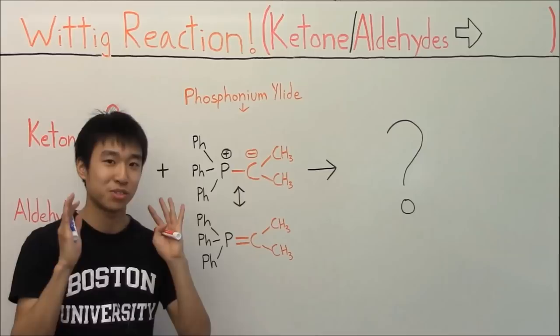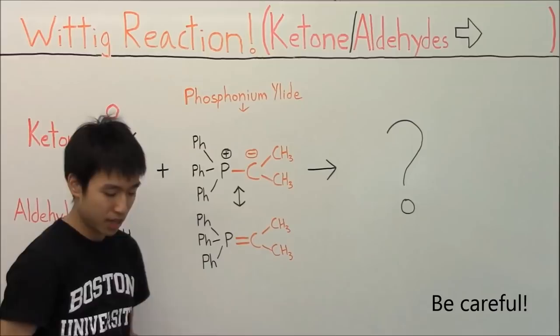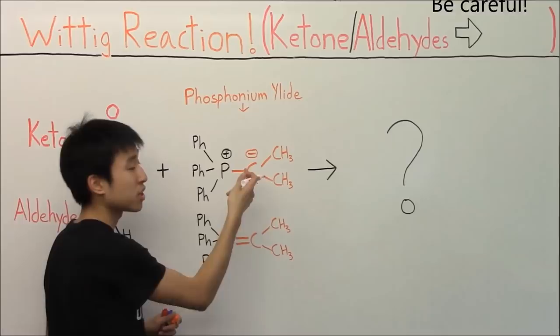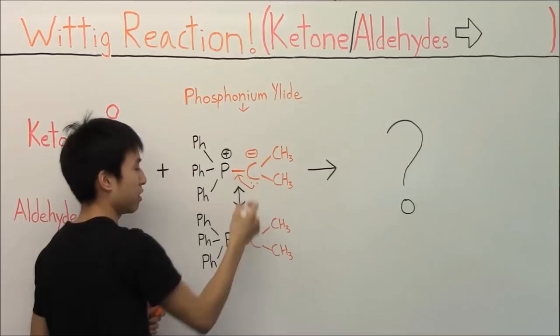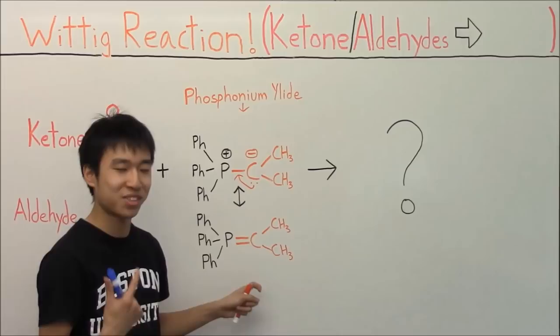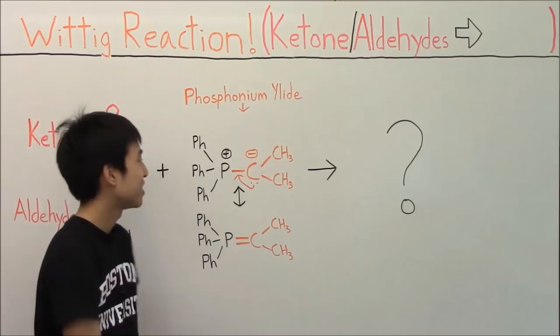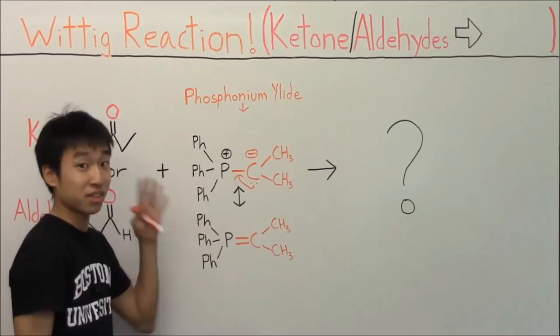I really want you guys to be aware that the ylid can be sneakily disguised in another form, because there's a resonance that can occur between the electrons of the carbon with a negative charge — also called a carbanion — which can resonate over and form a double bond. I know it doesn't look that different, but on my Orgo II final I got it confused. My professor put this reagent on the test and I just blanked out. So I really want to stress it to you guys so you don't make the same mistake. The ylid can be disguised in this resonance form and it's essentially the same thing.